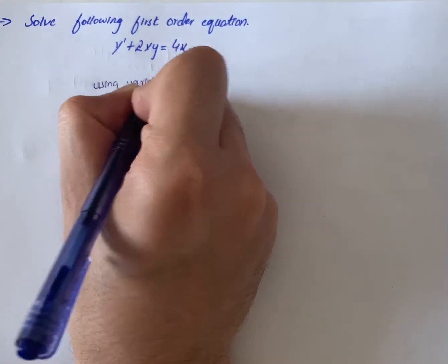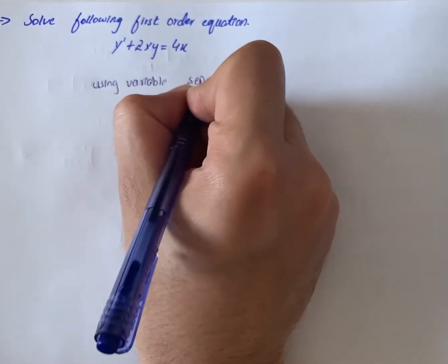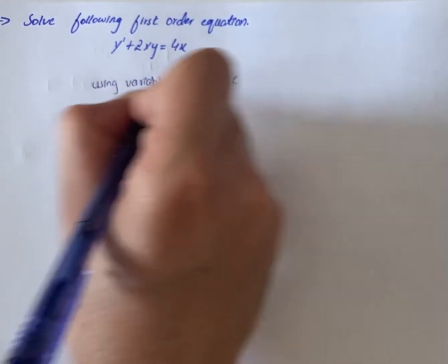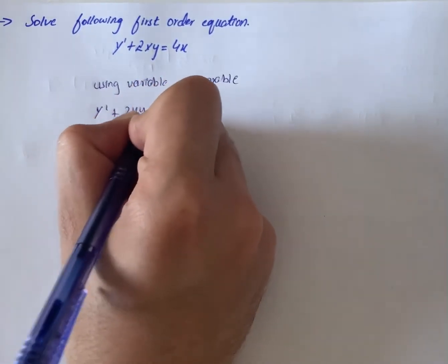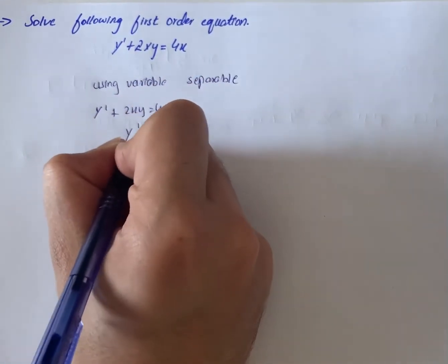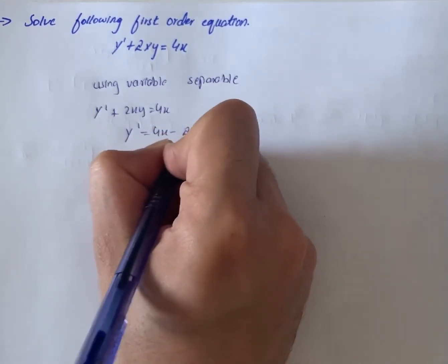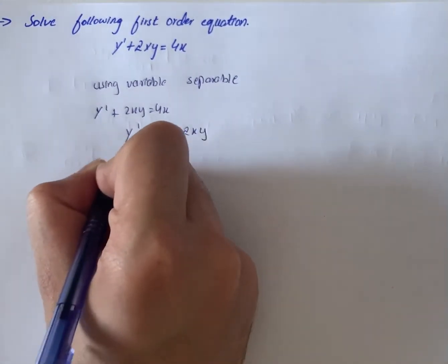Using variable separable, we have y' + 2xy = 4x, then y' = 4x - 2xy.